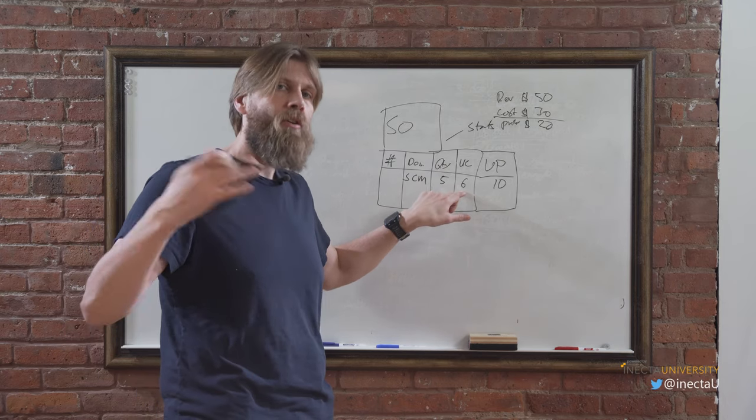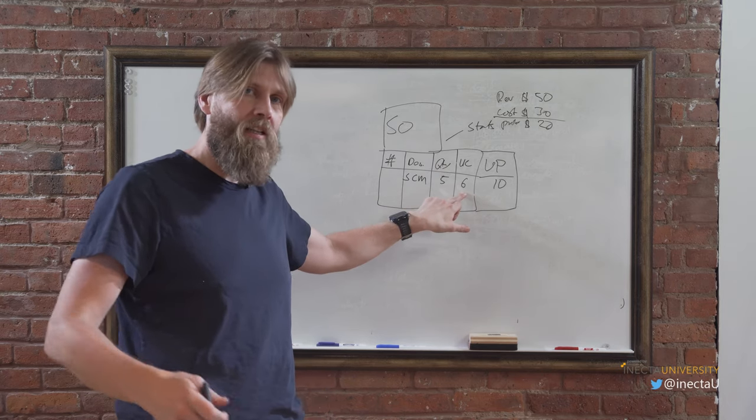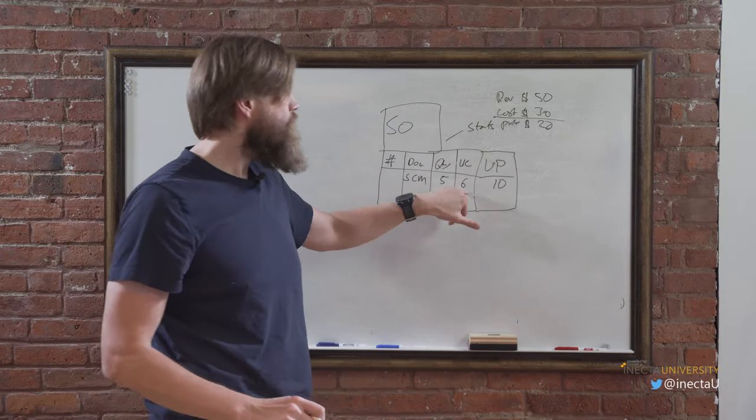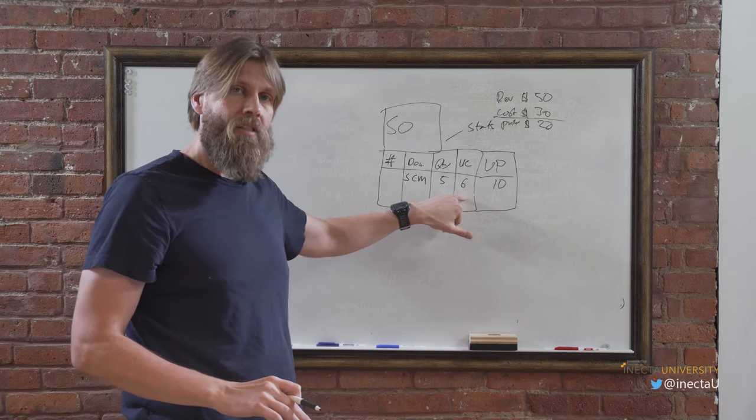Because this cost here is a snapshot of the cost when the sales order was created. This cost does not dynamically change as you are buying more of the product and selling the product. There might be a hundred things happening behind the sales order which are changing this cost. It's just a snapshot.